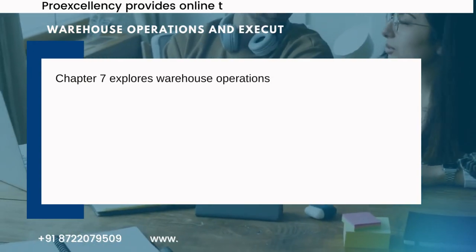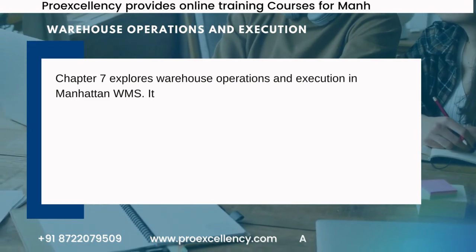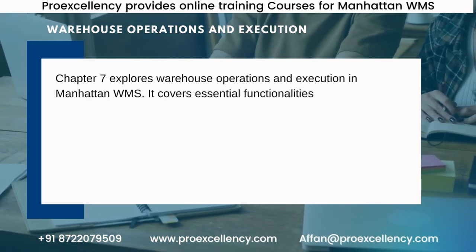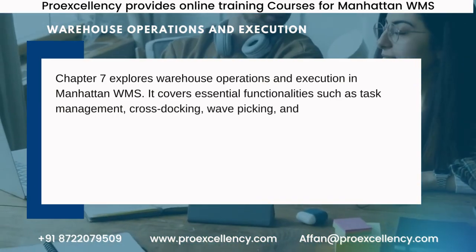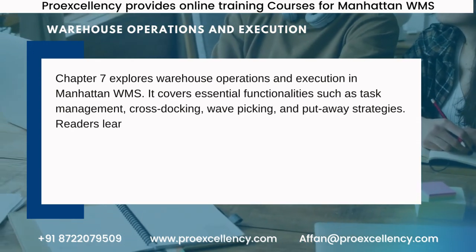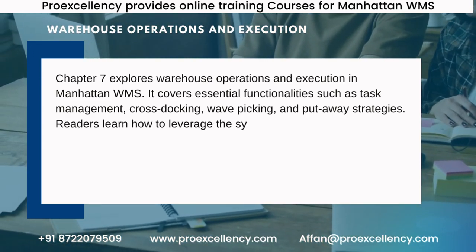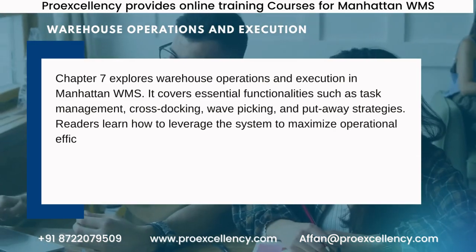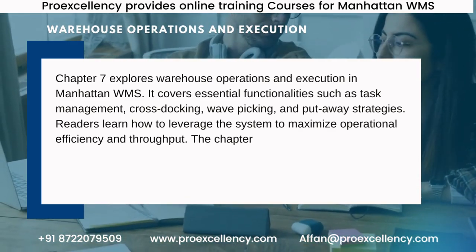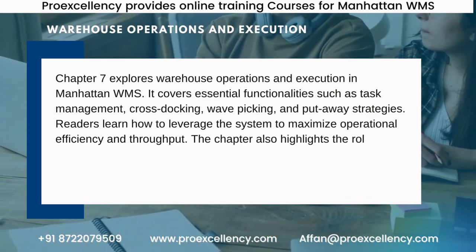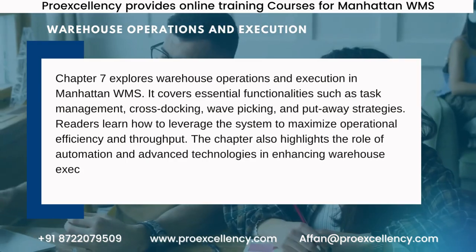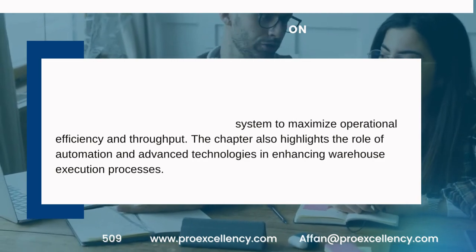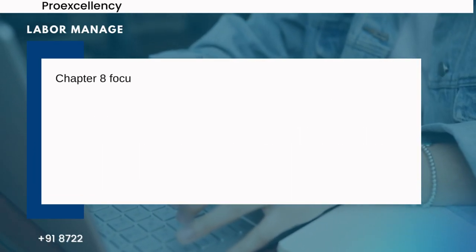Warehouse Operations and Execution. Chapter 7 explores warehouse operations and execution in Manhattan WMS. It covers essential functionalities such as task management, cross-docking, wave-picking, and put-away strategies. Readers learn how to leverage the system to maximize operational efficiency and throughput. The chapter also highlights the role of automation and advanced technologies in enhancing warehouse execution processes.